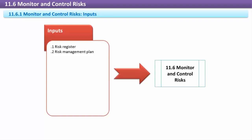Work Performance Information includes schedule and progress status information, budget and cost status, quality status, estimates to complete, resource utilization information, and lessons learned. Any of this information is useful for risk monitoring and control.